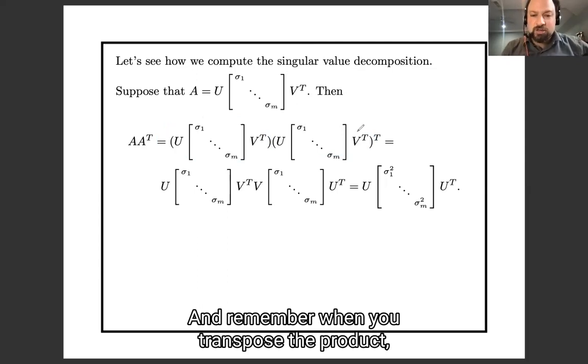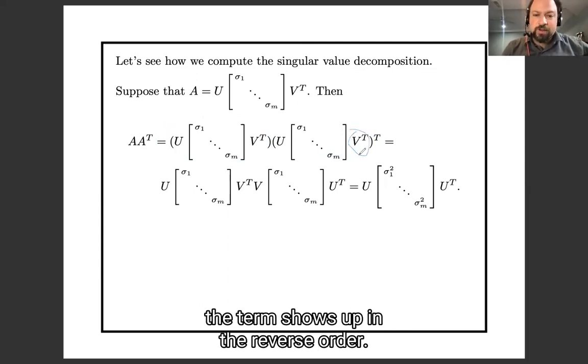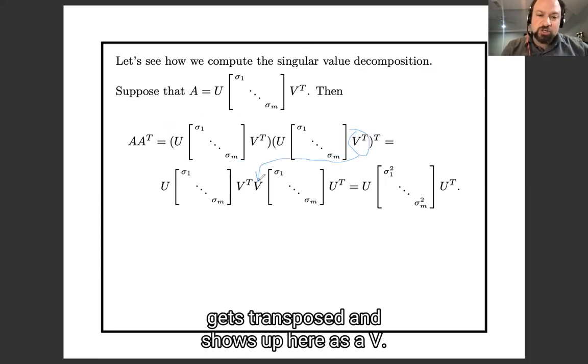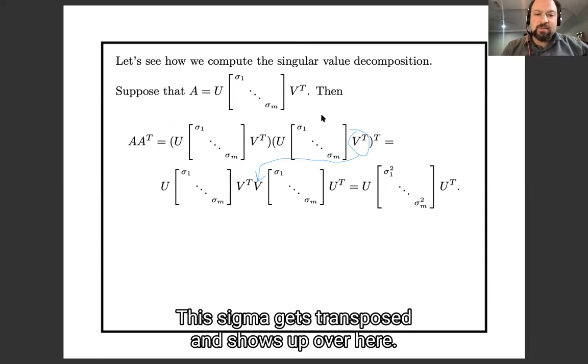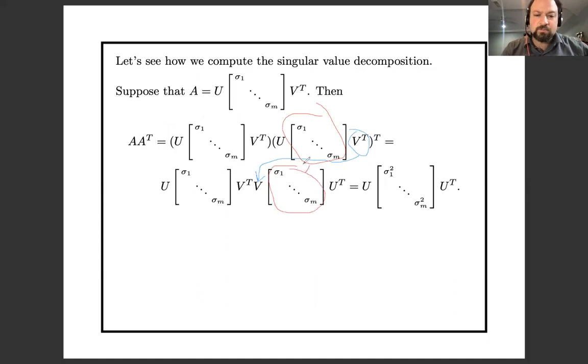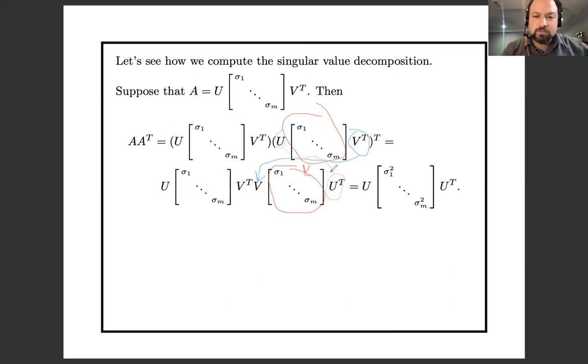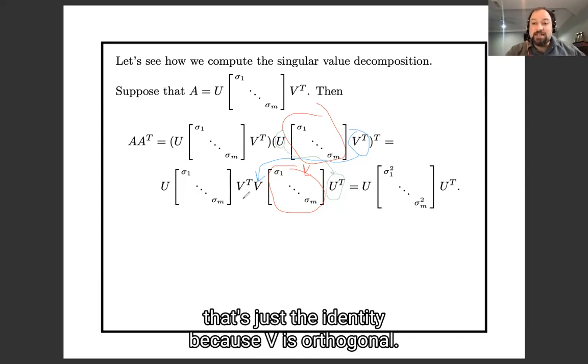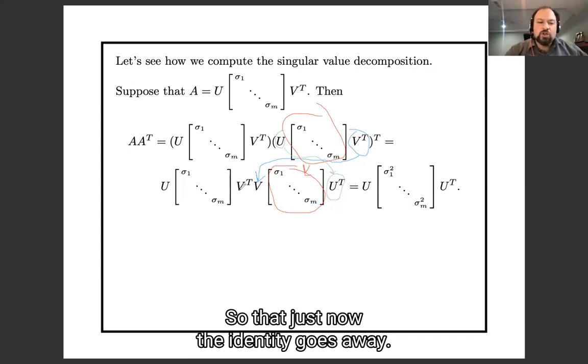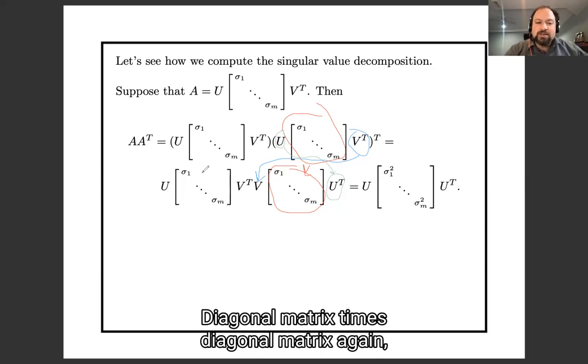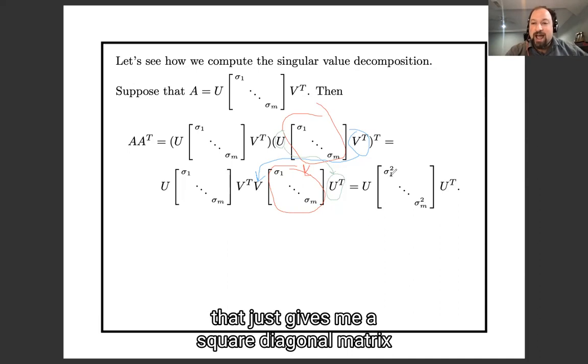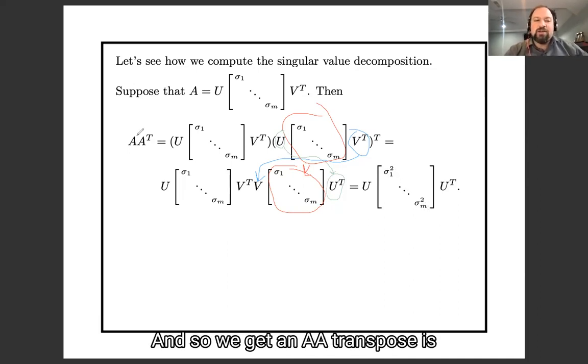This sigma gets transposed and shows up over here. And this U gets transposed and shows up over here. It's a U transpose. Now, V transpose, V, that's just the identity because V is orthogonal. So that just becomes the identity and goes away. Diagonal matrix times diagonal matrix again. That just gives me a square diagonal matrix of sigma squareds. And so we get that A, A transpose is U, sigma squareds, U transpose.